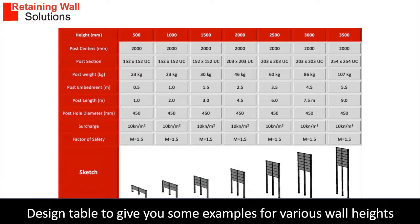King Post retaining walls are very effective at low heights but become very expensive over 3.5 meters in height due to the section size and depth of embedment. For example, a 3.5 meter high King Post has a total post length of 9 meters with an embedment depth of 5.5 meters.